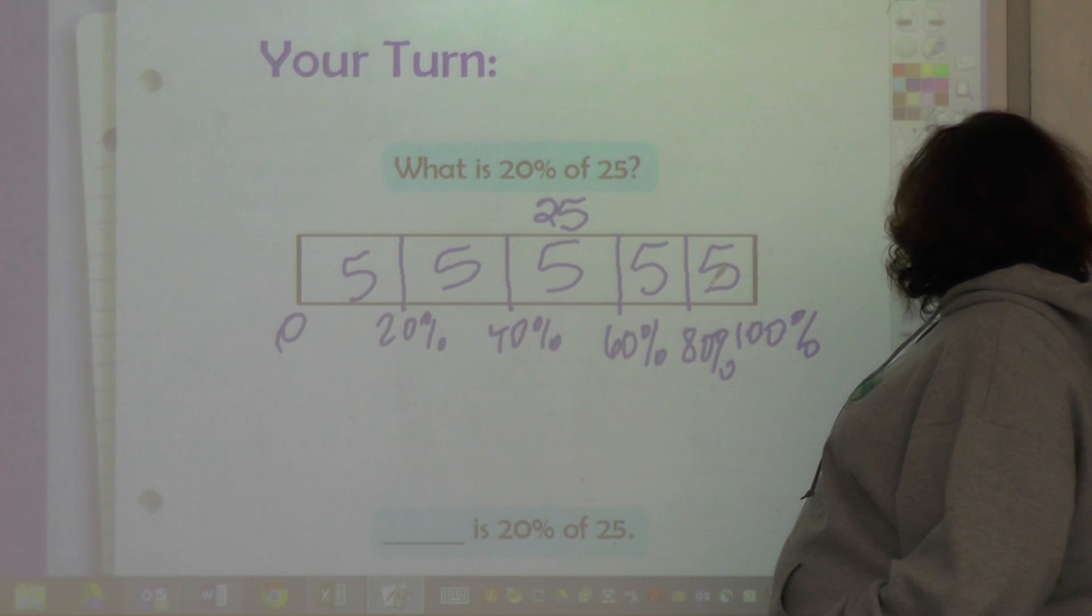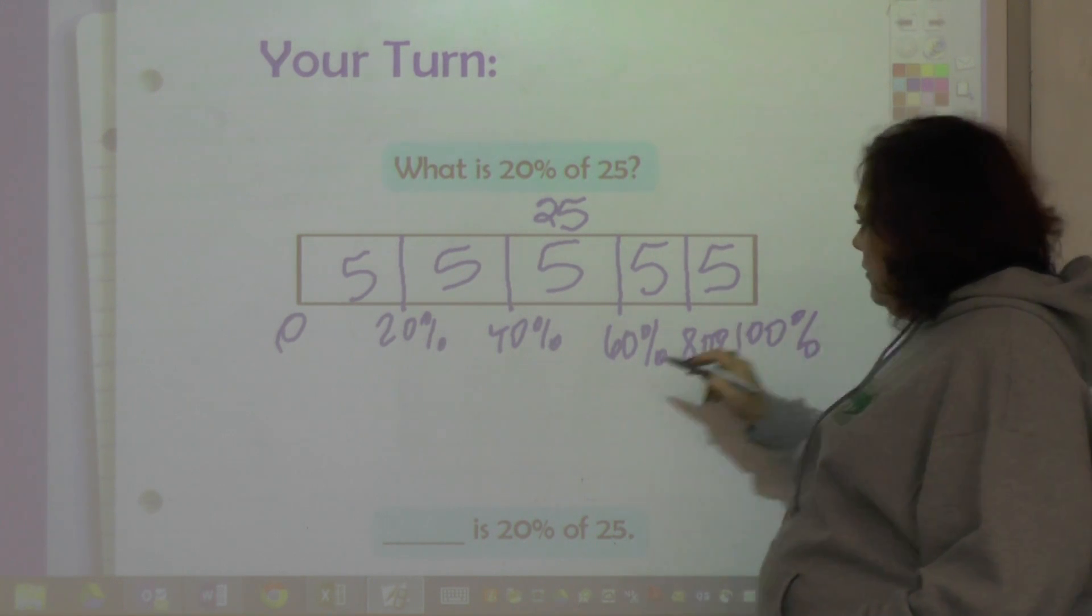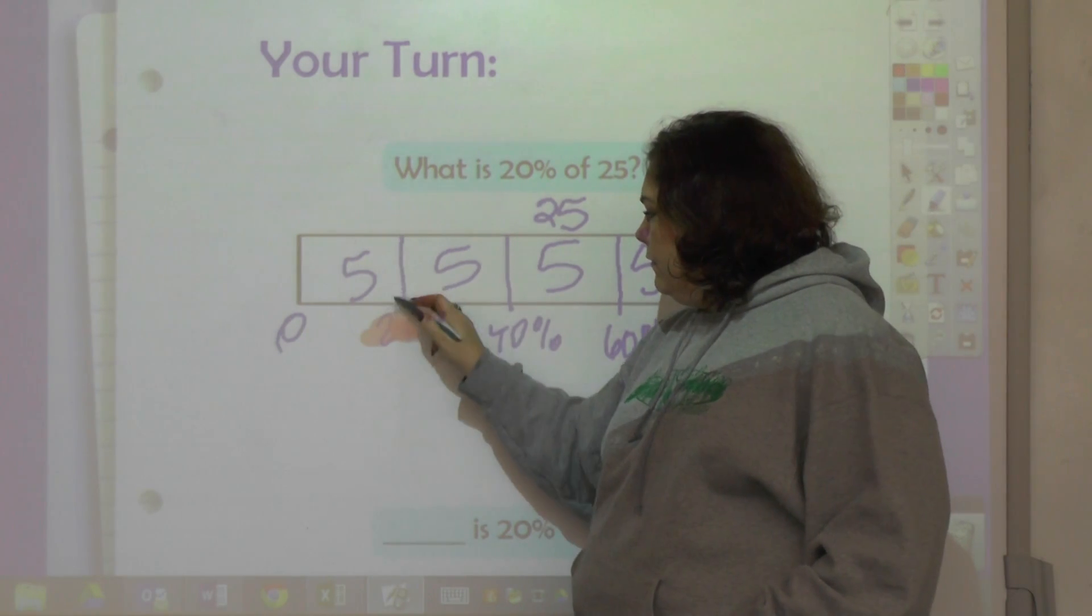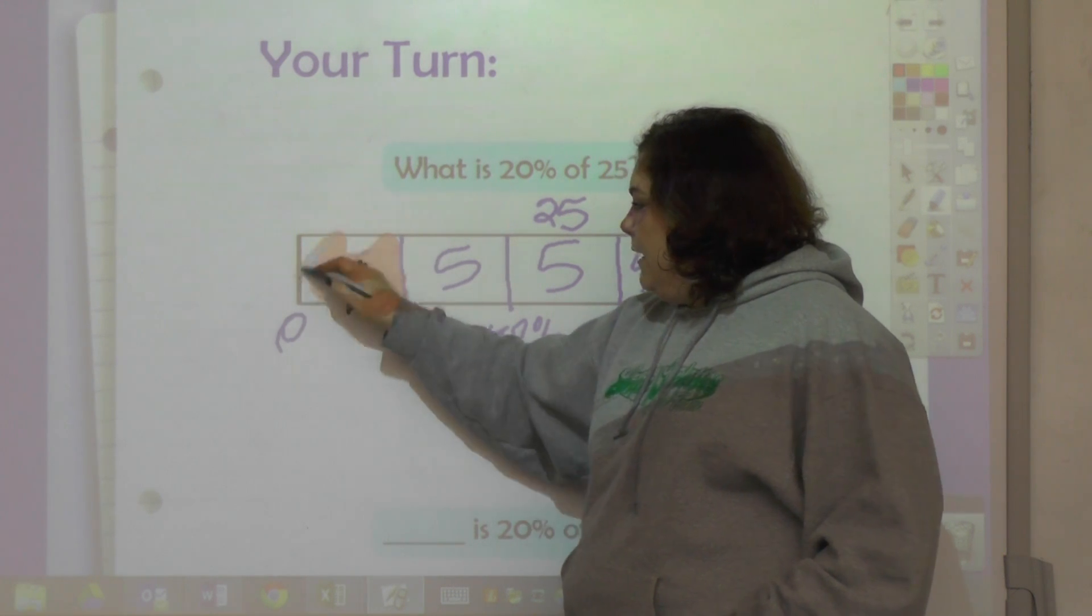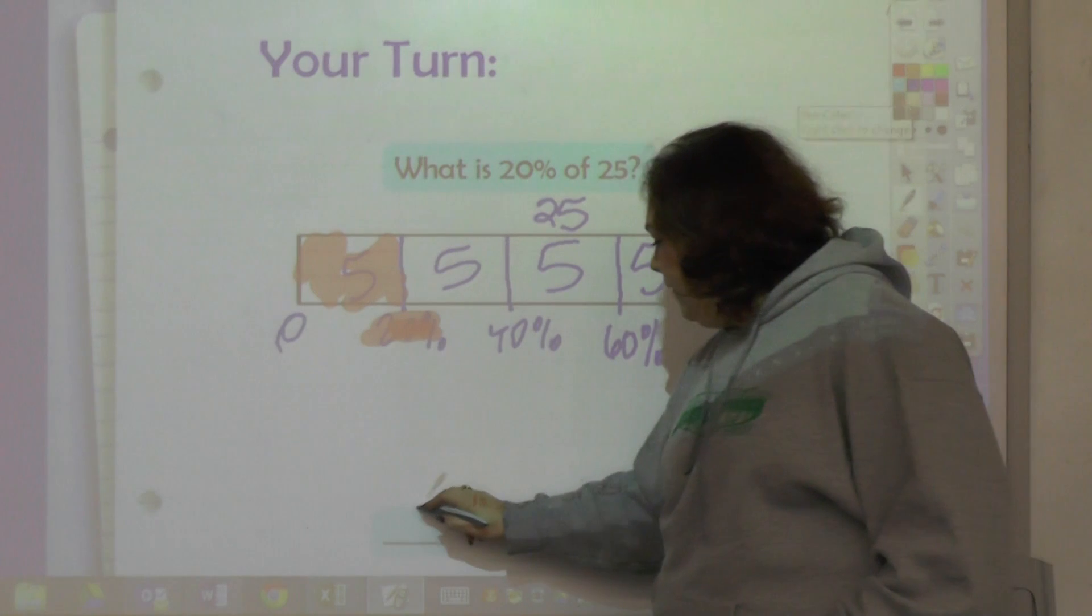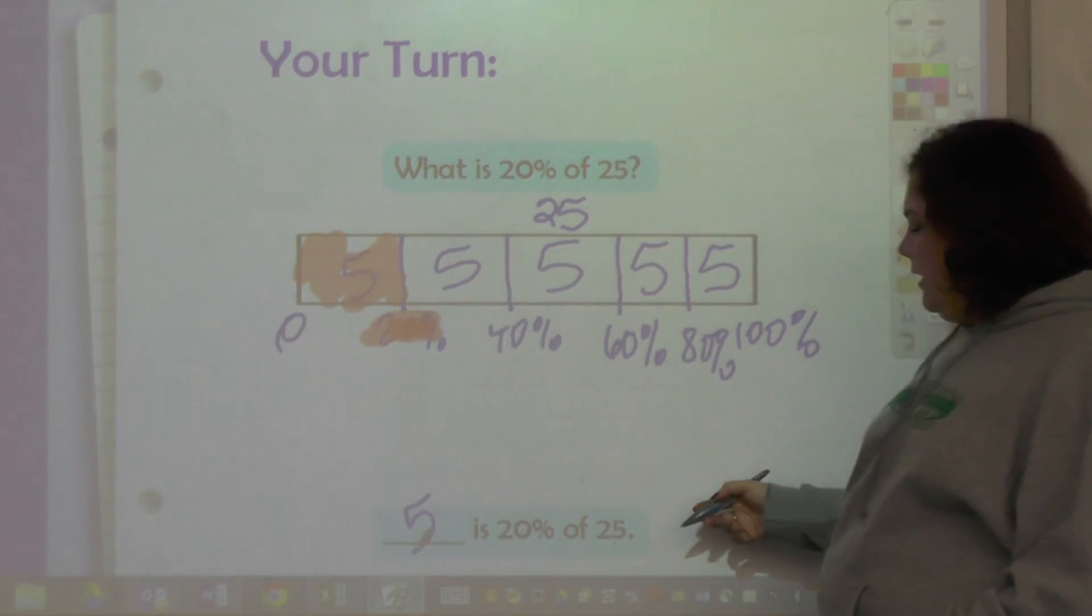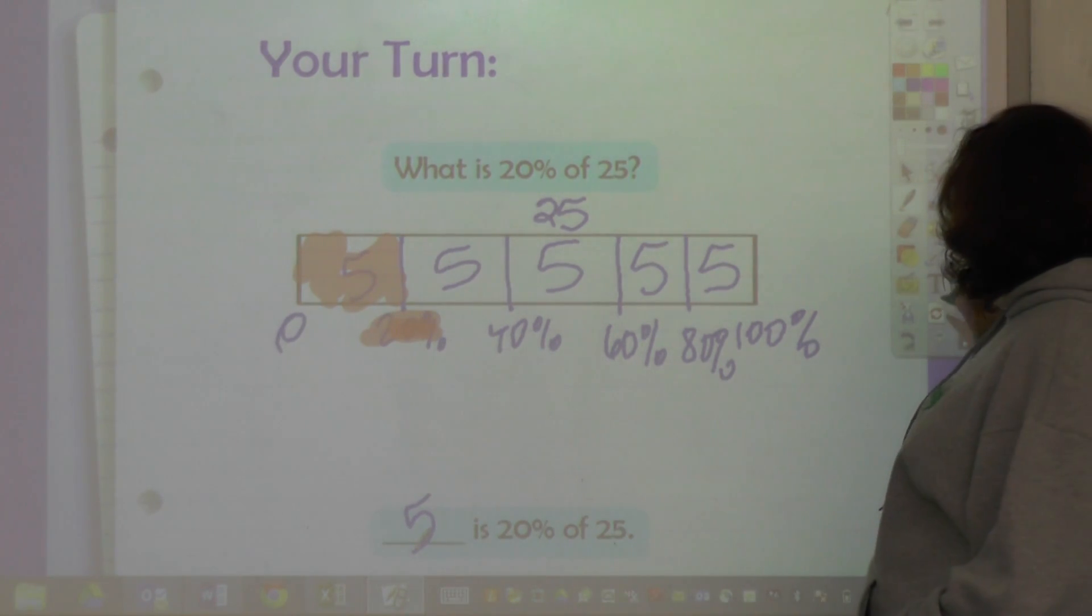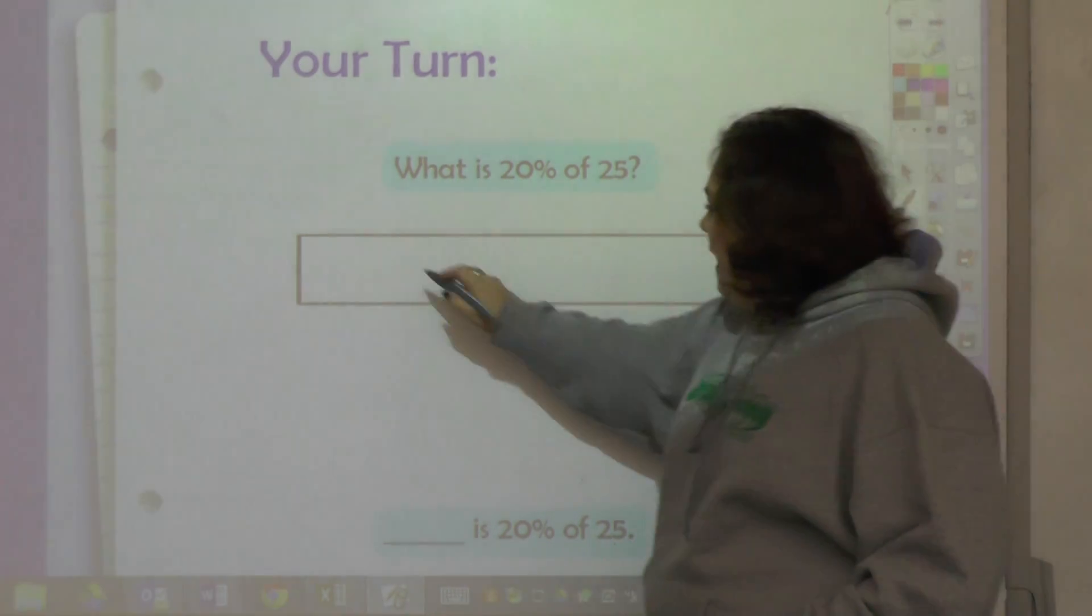And I want to know 20%, so that's going to be this amount. So the answer is five. Five is 20% of 25.